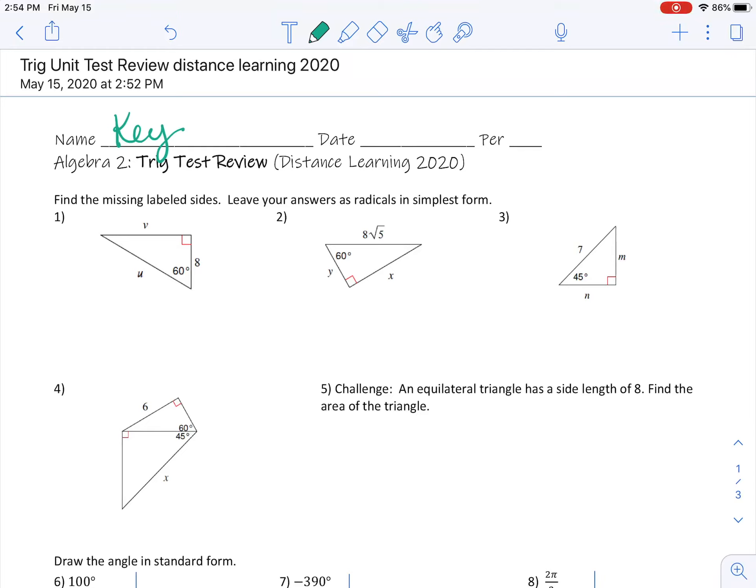Alright everybody, this is just a video of me doing the answer key. I thought I would make a video so you can hear my thought process as I'm doing these problems instead of just looking at the answer key. Find the missing labeled sides, leave your answers as radicals in simplest form.